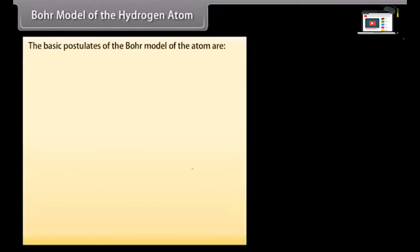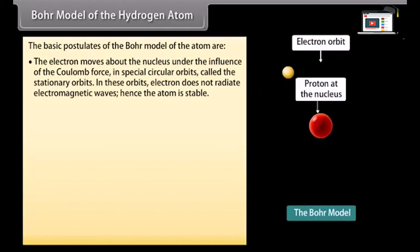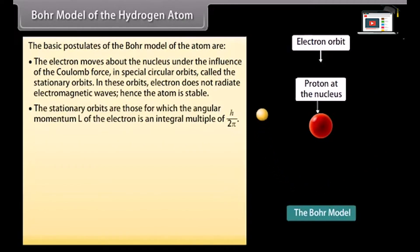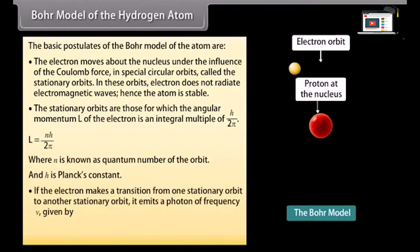Bohr's model of the hydrogen atom: The basic postulates are: the electron moves about the nucleus under the influence of the Coulomb force in special circular orbits called stationary orbits. In these orbits, the electron does not radiate electromagnetic waves, hence the atom is stable. The stationary orbits are those for which the angular momentum L of the electron is an integral multiple of h/2π: L = Nh/2π, where n is the quantum number and h is Planck's constant. If the electron makes a transition from one stationary orbit to another, it emits a photon of frequency ν = (Ei − Ef)/h.